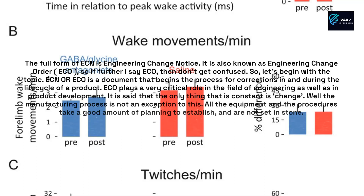ECN or ECO is a document that begins the process for corrections in and during the life cycle of a product. ECO plays a very critical role in the field of engineering as well as in product development.